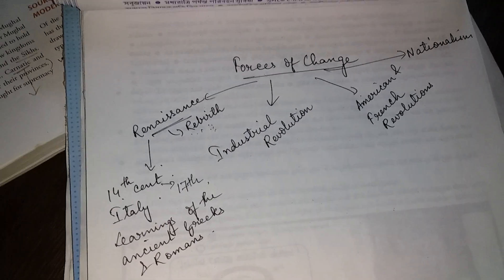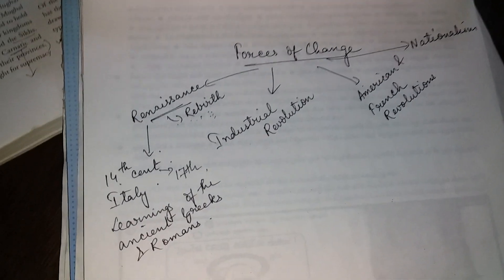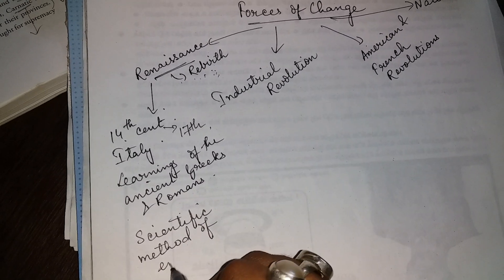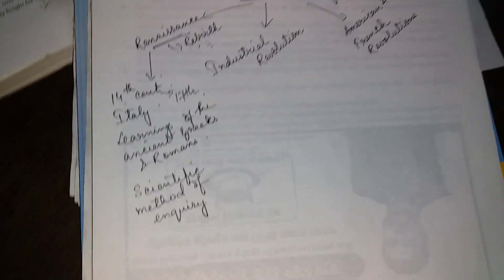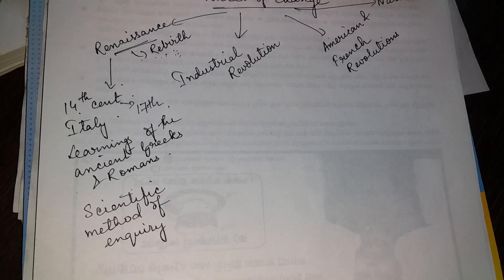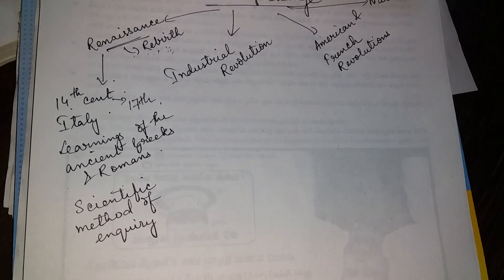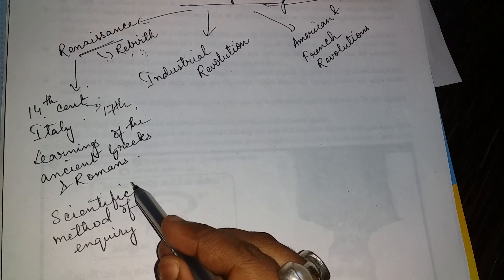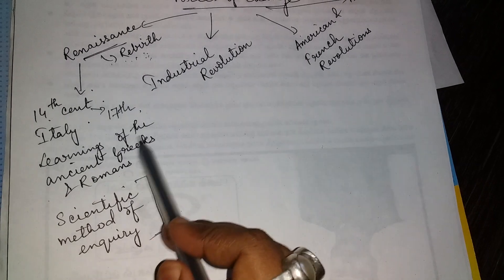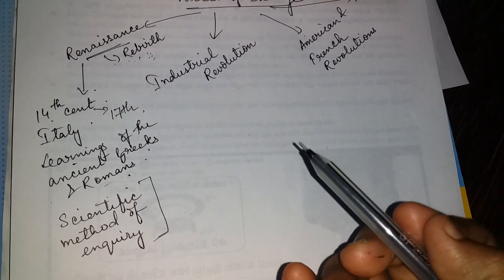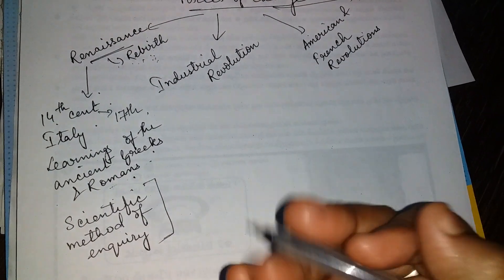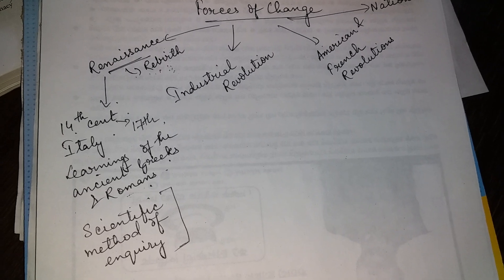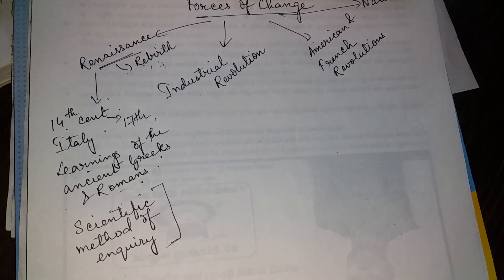This Renaissance gave rise to the scientific method of inquiry — learning by questioning, observation, and experimentation. Not only this, it encouraged people to think for themselves and question old beliefs and superstitions. As people became aware of the scientific method and the learnings of ancient Greeks and Romans, they began to question the old beliefs and superstitions followed by others.